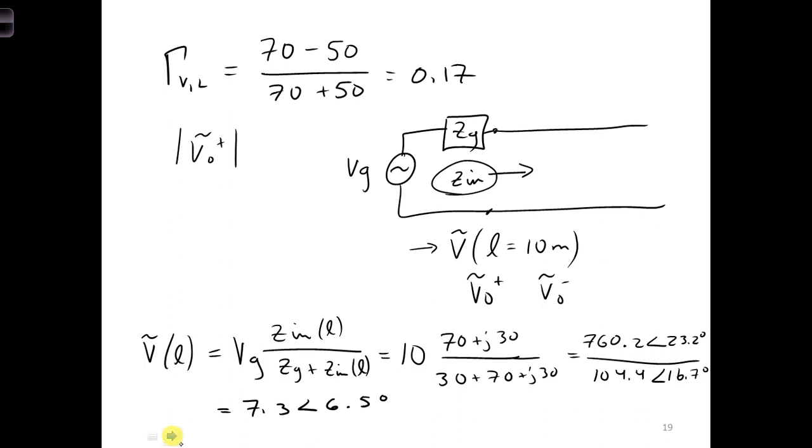Now we have the total voltage phasor at the generator. We still need to get V naught plus. We can use the fact that the total voltage phasor at the generator is equal to both the positive and negative traveling voltage phasors. Together, they account for all the waves traveling on the transmission line, to the left and to the right.